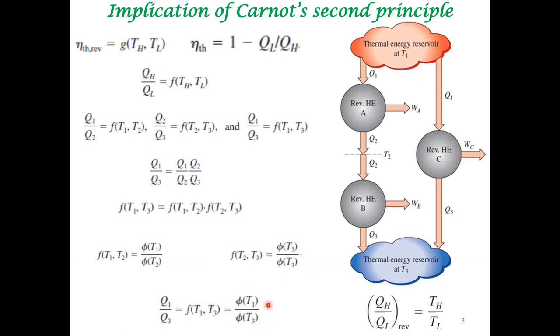Kelvin suggested that this phi T1 should be just TH and phi T3 should be TL itself. This gives a way of reframing temperature scales based on efficiency of reversible heat engine. Even though it's not practical in the sense that reversible process itself cannot be realized in reality, but it gives you a logical way of thinking through the temperature scale, making it independent of thermometric material.